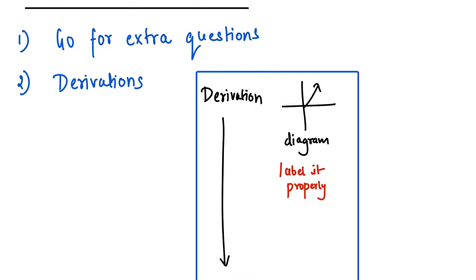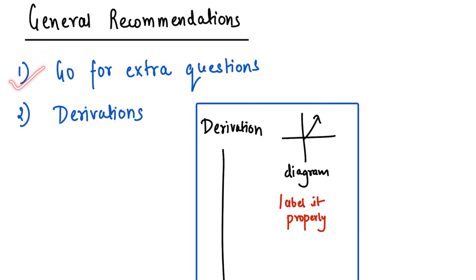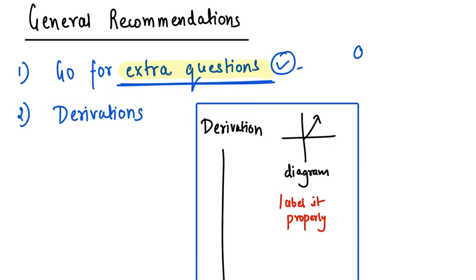Now let's move on to general recommendations. Firstly, go for extra questions — when you attempt extra questions, your chances of scoring more increase. If you have done anything wrong, the examiner may consider the extra question during evaluation. You should do this after you have completed the paper — complete the paper first, and at the end write and attempt the extra question, including the sub-parts.